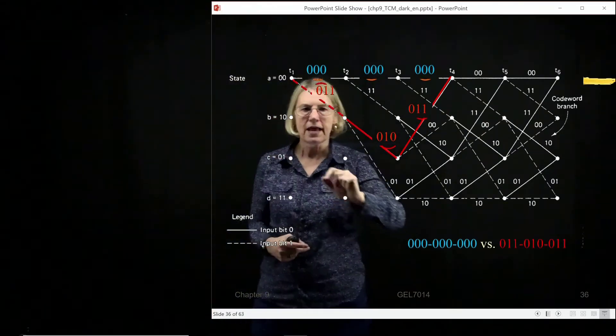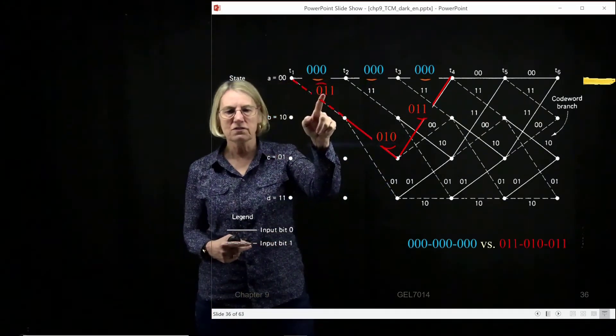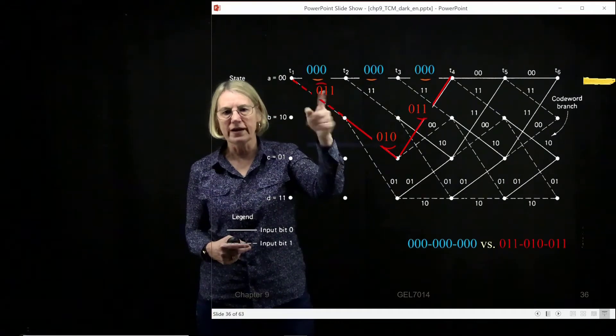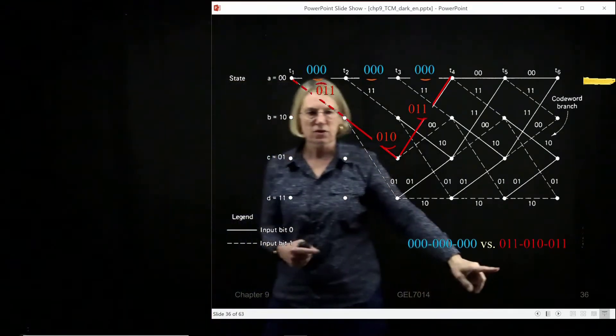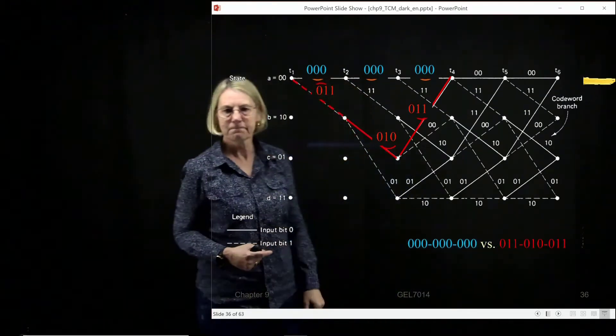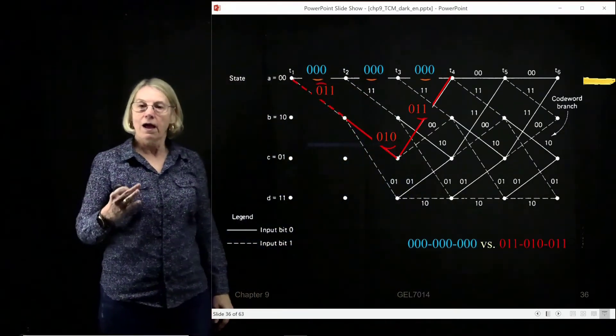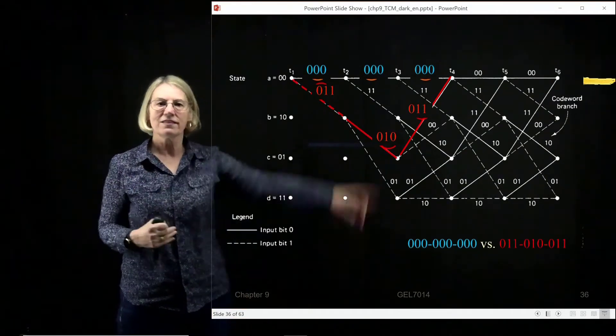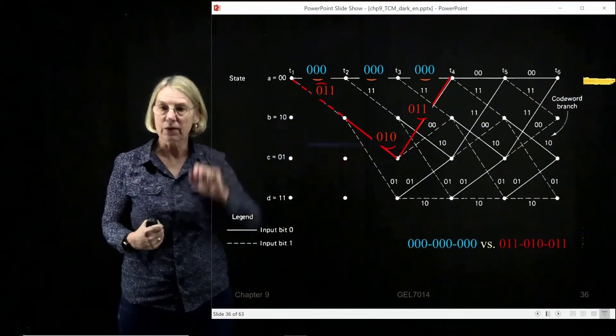And so the coded sequence was 1, 1, and now I've added the 0 to it. So I've got 0, 1, 1, 0, 1, 0, 1, 1. And so now my task is to calculate the distance between these two sequences.